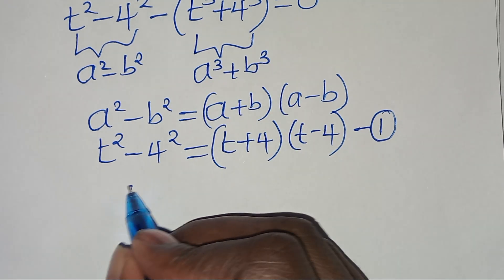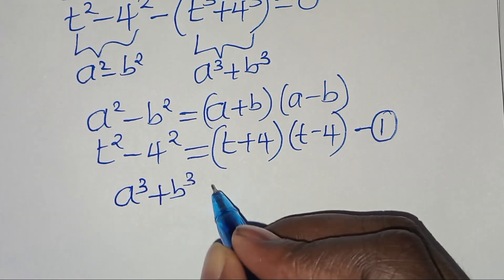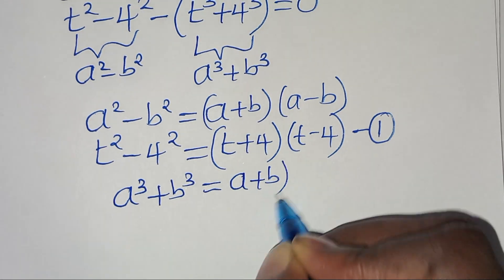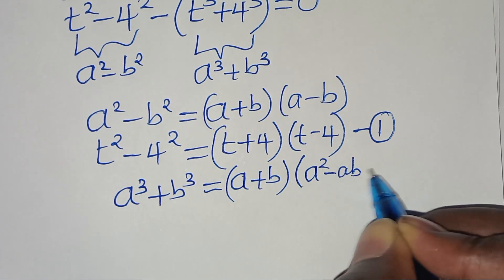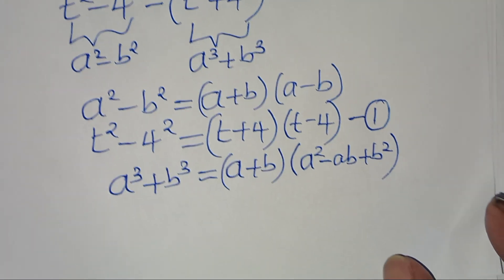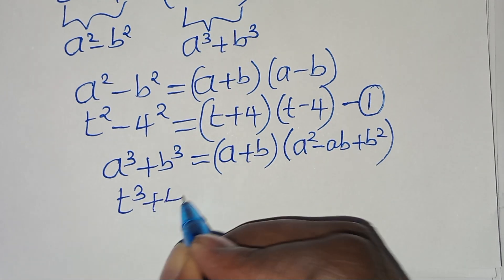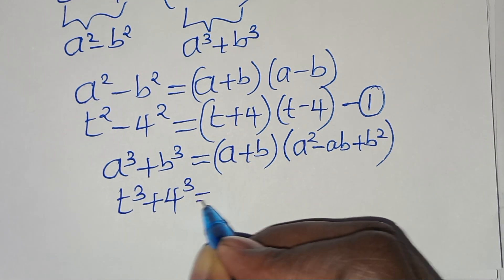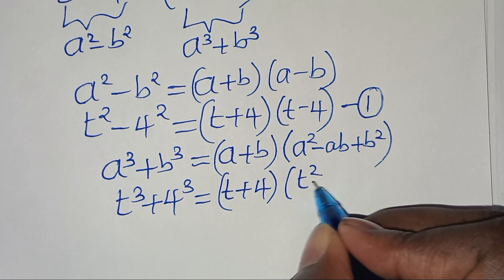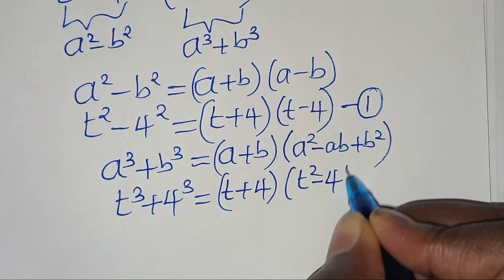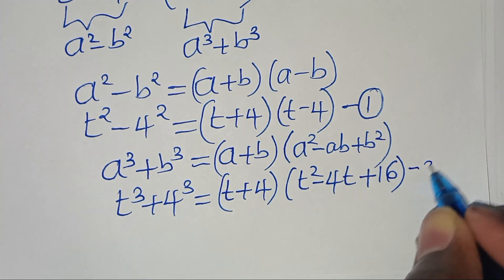The second part is the sum of two cubes expressed as a cubed plus b cubed, which we can express as a plus b times the quantity a squared minus a times b plus b squared. So t cubed plus 4 cubed can be expressed as t plus 4 times the quantity t squared minus 4t plus 16. Let's call this equation 2.